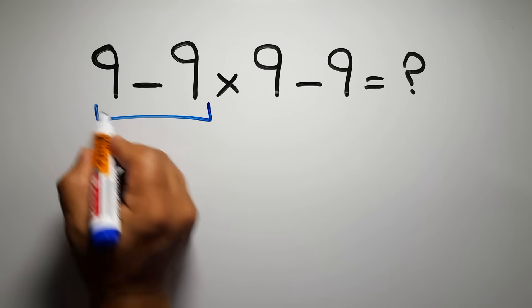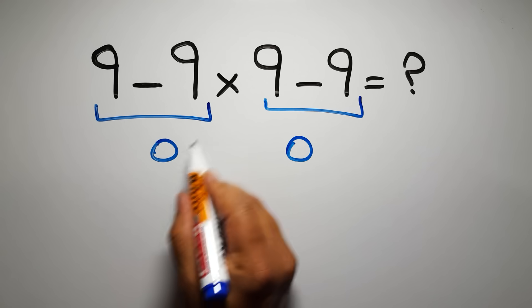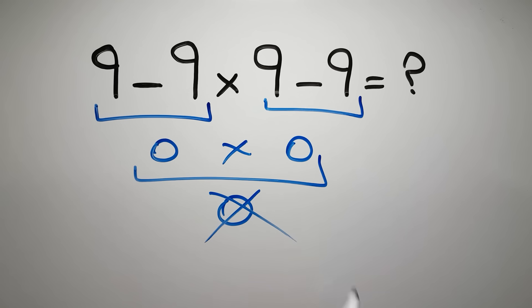9 minus 9 gives us 0, and again here we have 9 minus 9, so 0 times 0 gives us 0. But this answer is not correct.